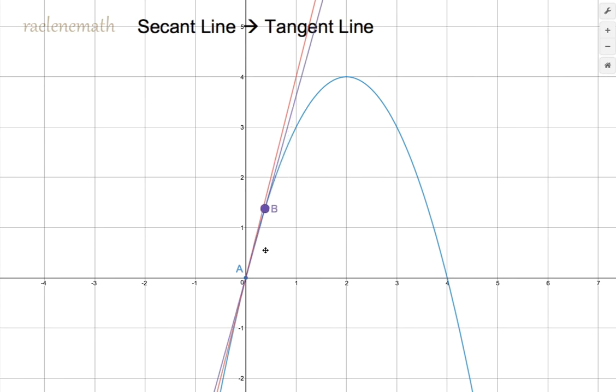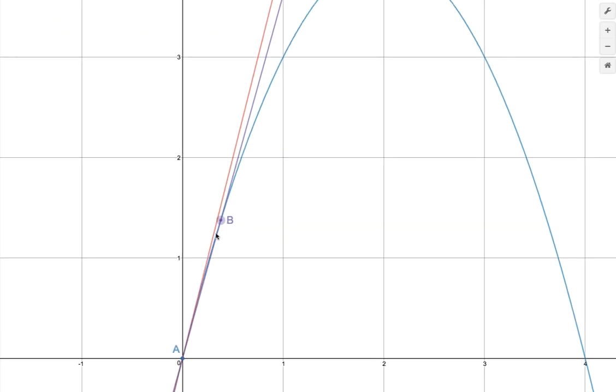And when we do that, if we zoom in a little bit, we can start to see that the purple secant line approaches the red tangent line as the second point, point B, approaches point A, the point of tangency.